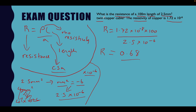This is a common mistake. The question specifies a twin copper cable — meaning there's a cable with two cores inside carrying the current. What we've calculated is the resistance for one length of cable. So we need to multiply 0.68 by 2 because we have a twin cable. That gives us 1.376 ohms, which is the resistance of a 100-meter twin copper cable with a CSA of 2.5 millimeters squared.